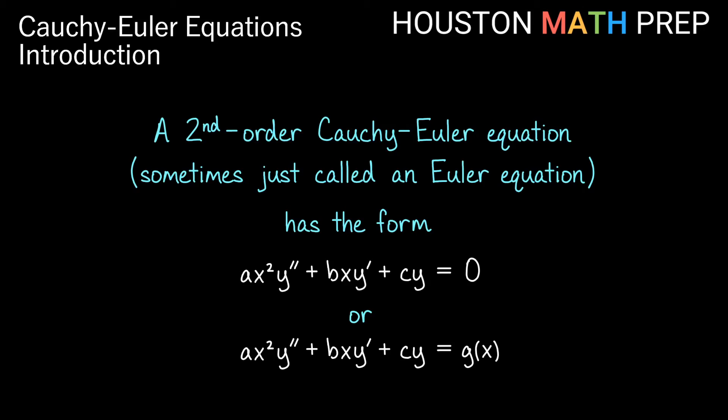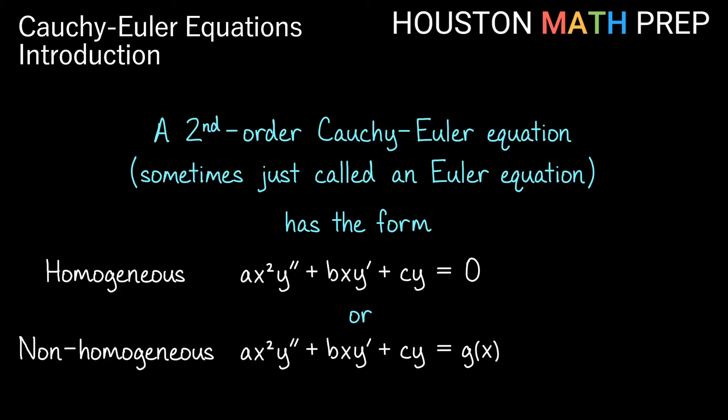Hey everyone, Houston Math Prep here to talk to you about second-order Cauchy-Euler equations. Sometimes these are just called Euler equations. These have the form ax squared y double prime plus bxy prime plus cy equals zero, or equals g of x. If it's equal to zero, it's a homogeneous equation. If it's equal to some non-zero function of x, then it's non-homogeneous.